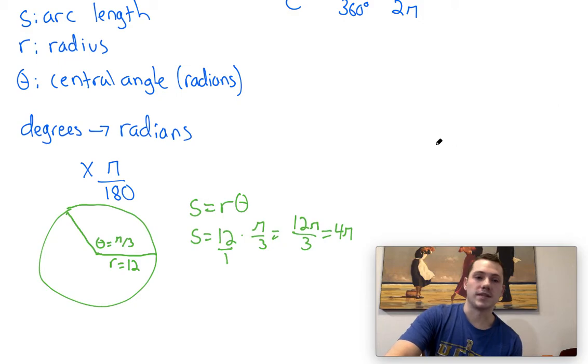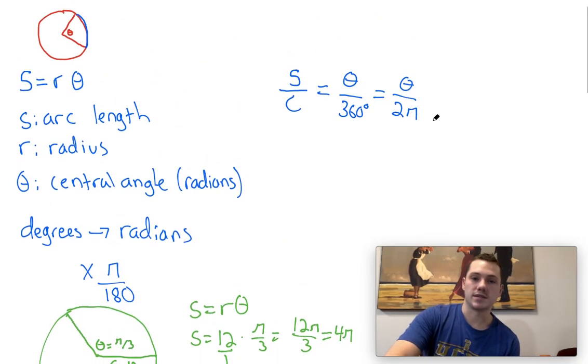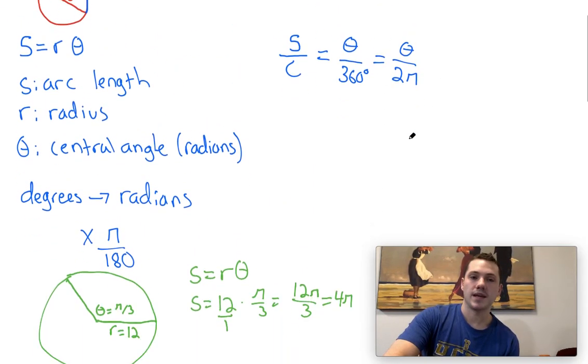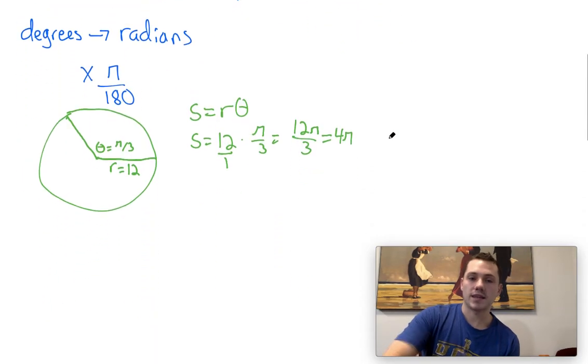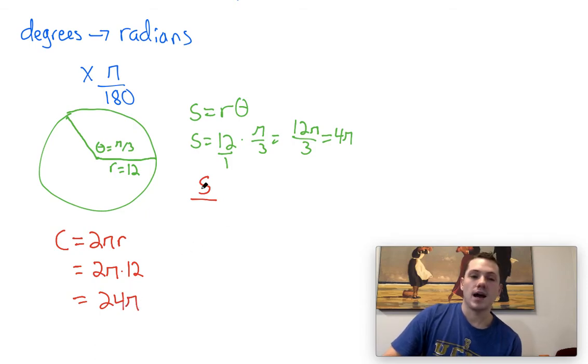Let's say we wanted to, instead of using S equals r theta, use this equation up here. So what we have is the arc length, which is what we're trying to find, over the circumference. On the SAT, they will provide you with this formula. The circumference of a circle is equal to 2 pi times the radius. So for this particular circle, that would be 2 pi times 12, which just equals 24 pi.